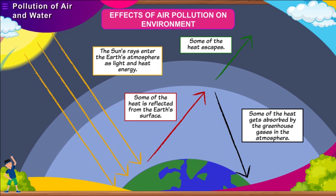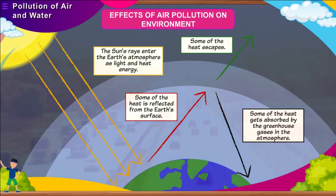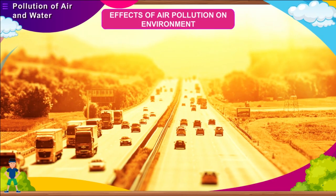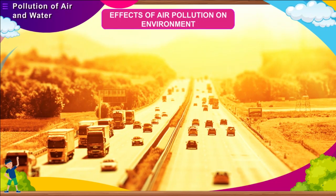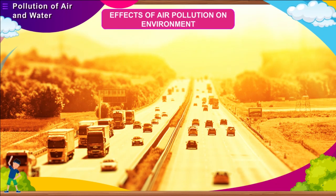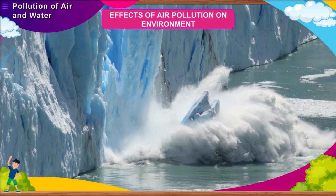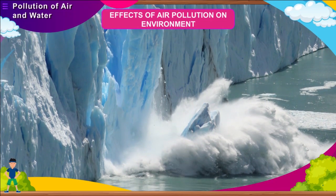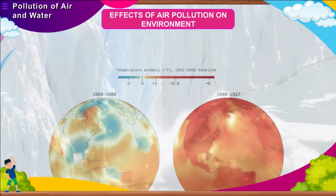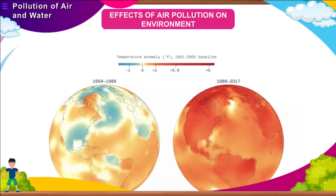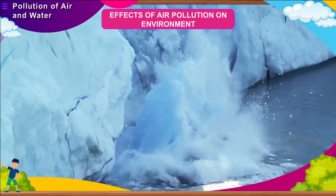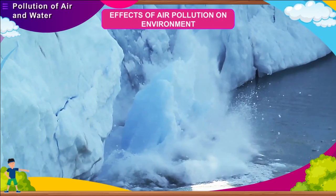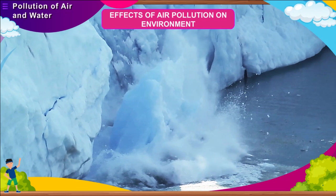Carbon dioxide traps heat and does not allow it to escape into space. Other greenhouse gases include methane and water vapour. It is because of the increased greenhouse effect that the average temperature of the earth has increased by up to 1 degree Celsius, which is quite alarming. The polar ice caps have already started melting at an alarming rate. If the earth's temperature keeps rising at this rate, these polar ice caps would melt completely and all the land on earth will be submerged in water.